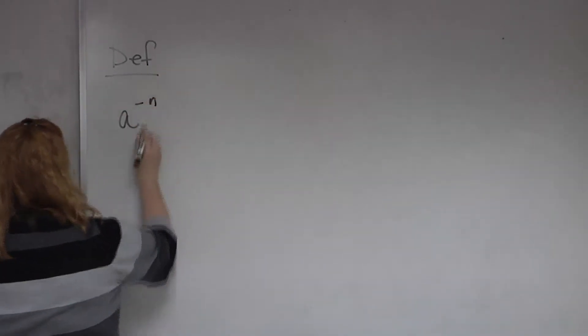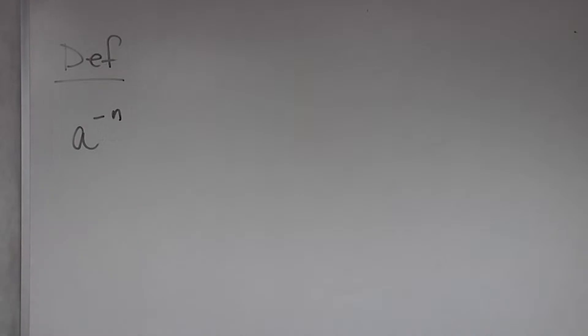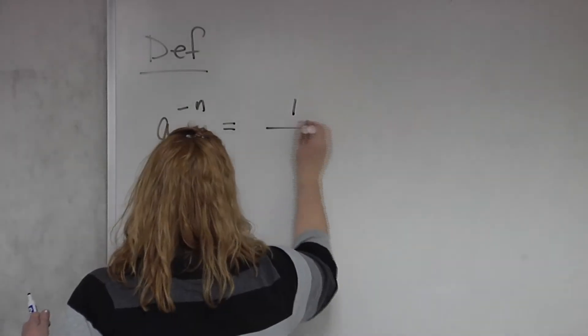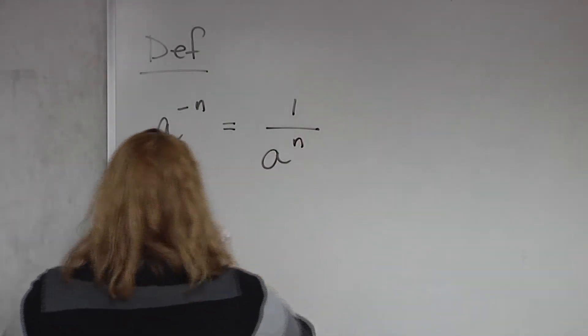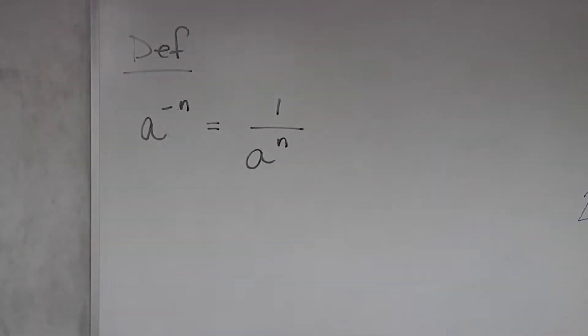So we have a to the negative n. If you took that a to the negative n and wrote it as a fraction, what would it look like? 1 over a to the n. So the numerator became the denominator, the denominator became the numerator, and your negative sign, since you moved that exponent, goes to the other position.